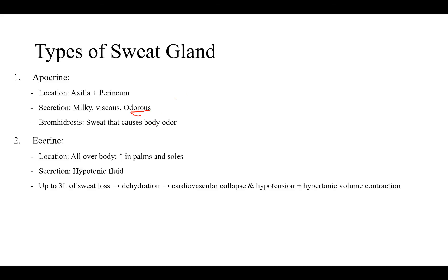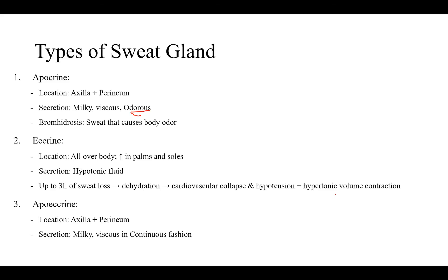Then you have eccrine glands, located all over the body, with increased density in the palms and soles. These produce hypotonic fluid, and up to 3 liters of sweat loss can cause dehydration, cardiovascular collapse, and hypertension, plus hypertonic volume contraction.